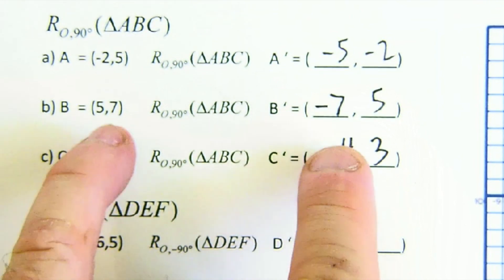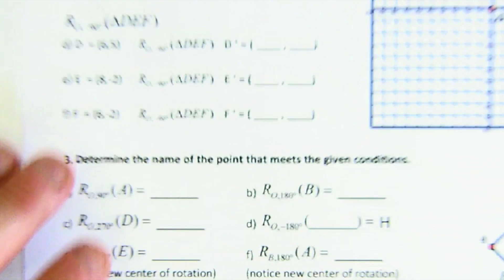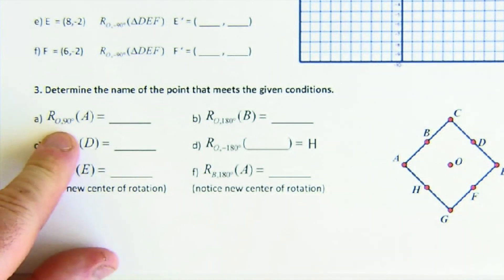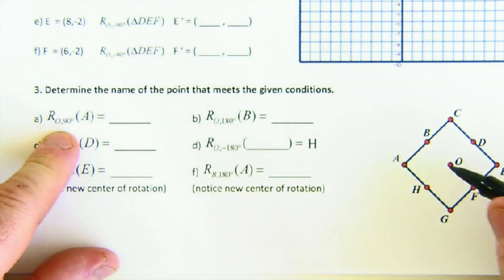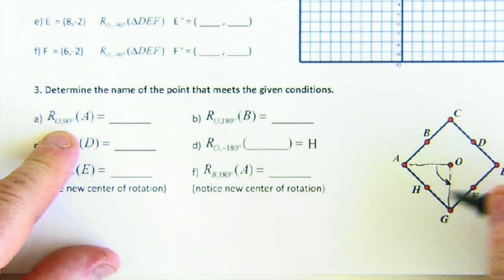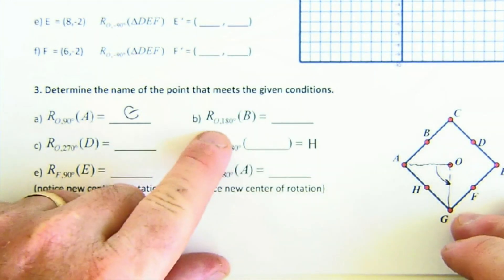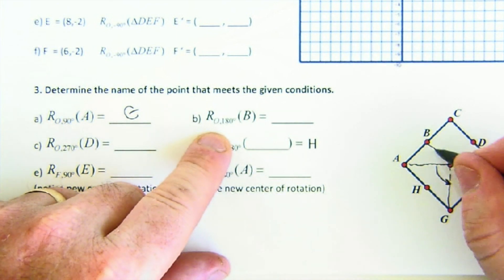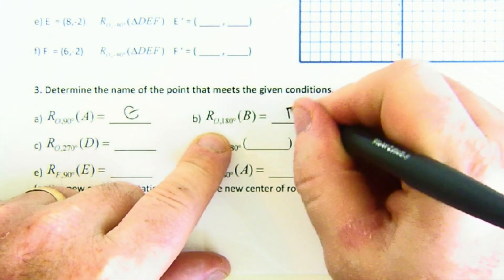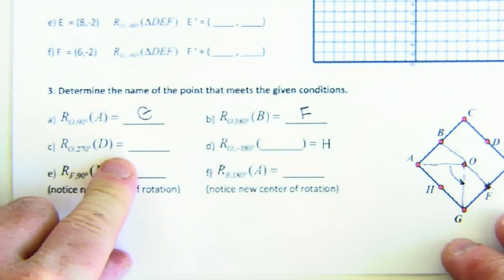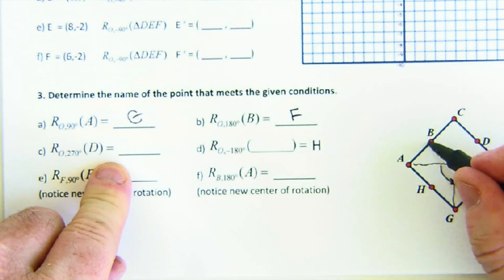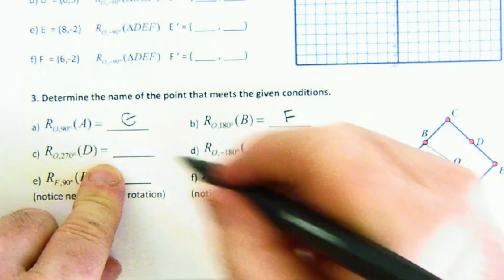Let's get to my favorite kinds of questions — these ones with shapes and connected points. Rotate A about O, 90 degrees: A rotates 90 and lands at G. Rotate about B, 180 degrees: B is the center, rotating 180 puts it on the opposite side at F. Rotate D about O, 270 degrees: at 90 it's at B, at 180 it's at H, at 270 it lands at F.